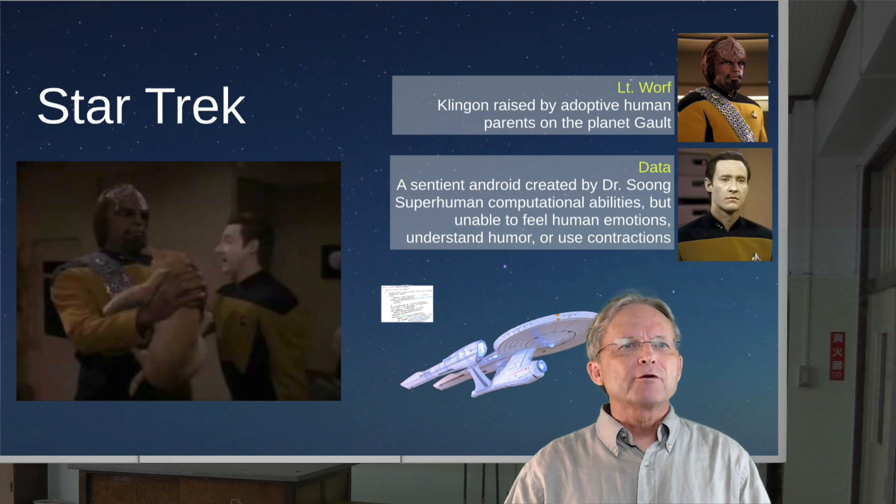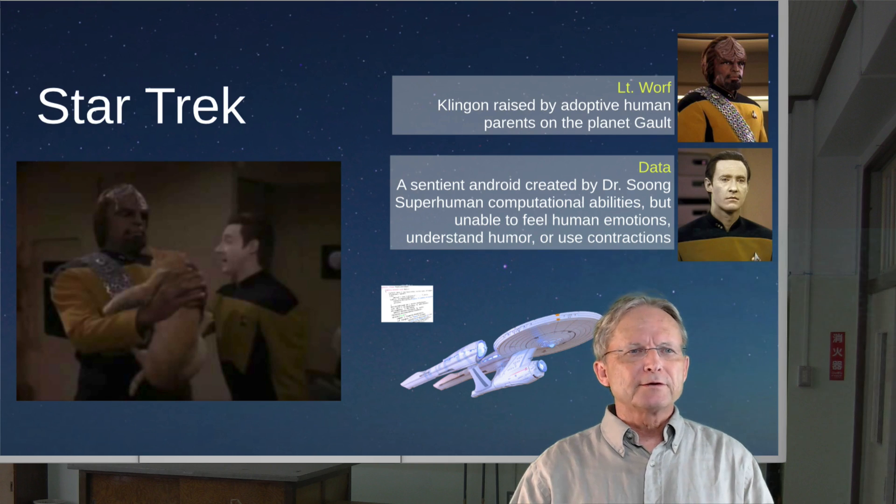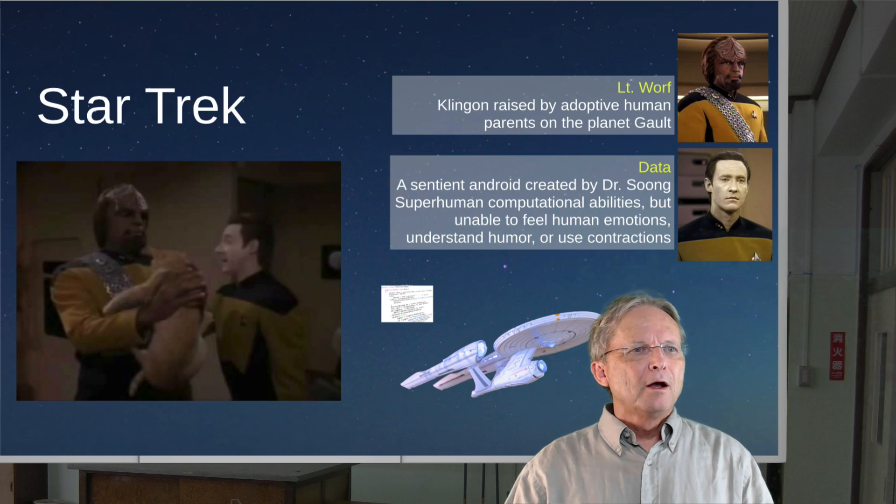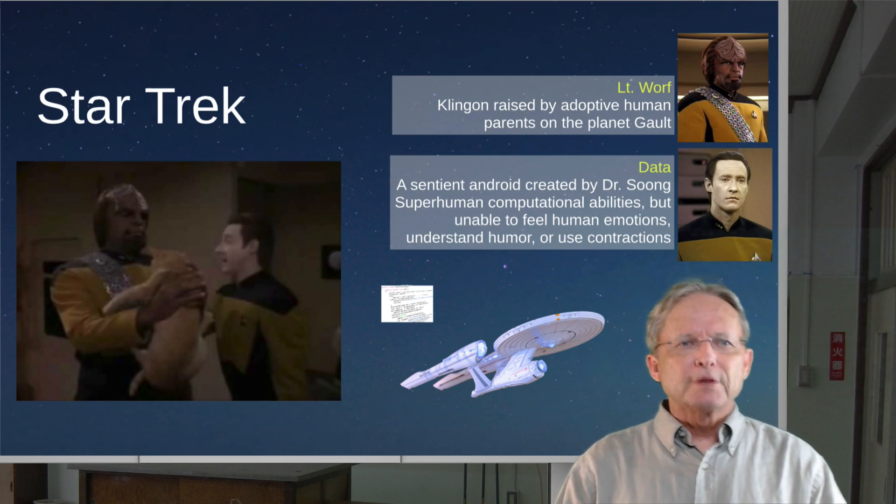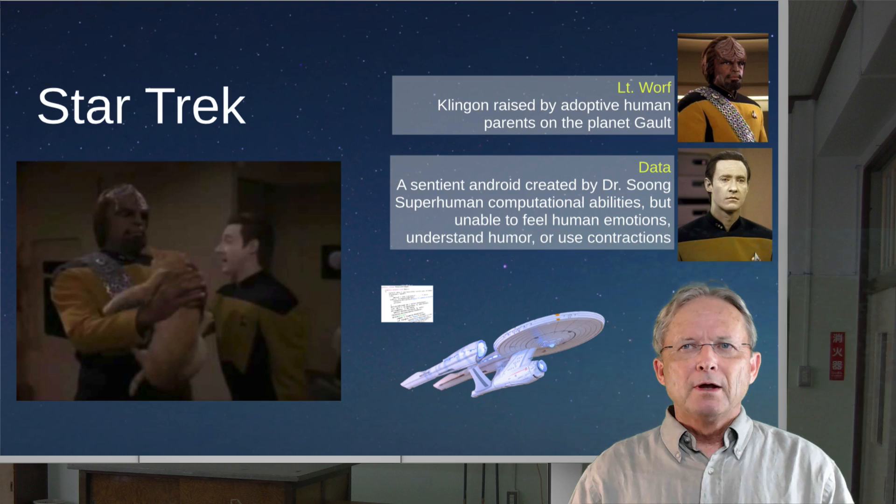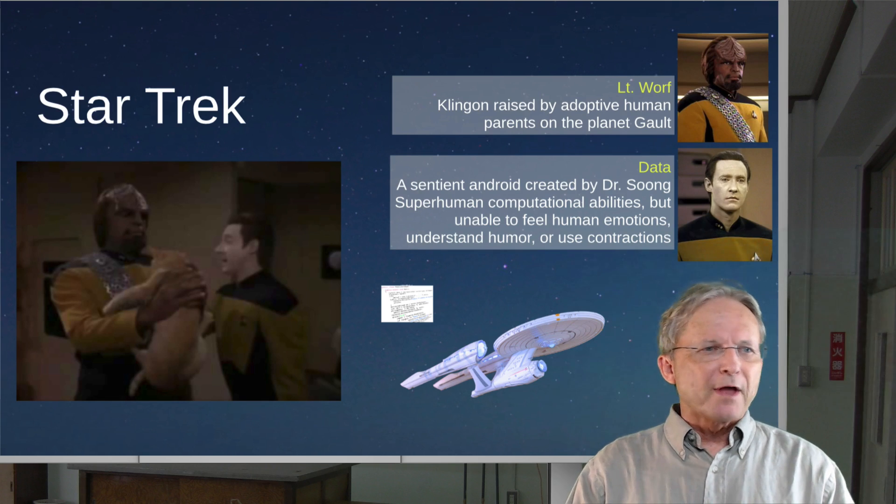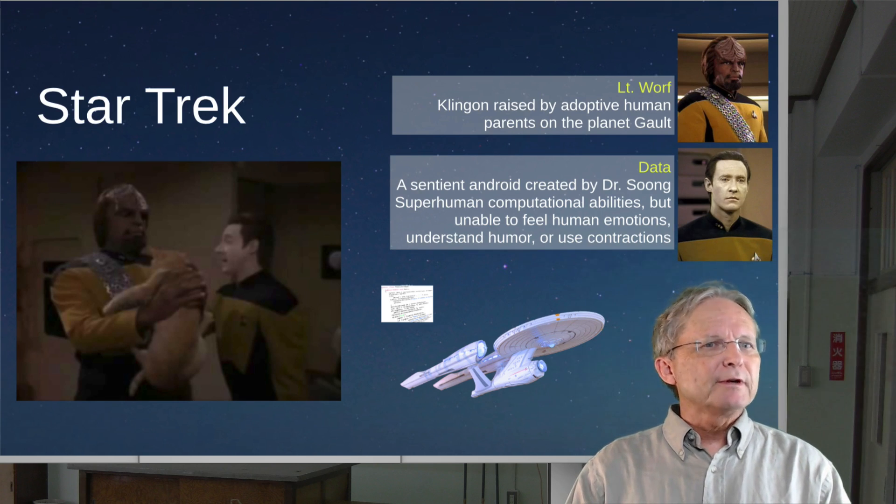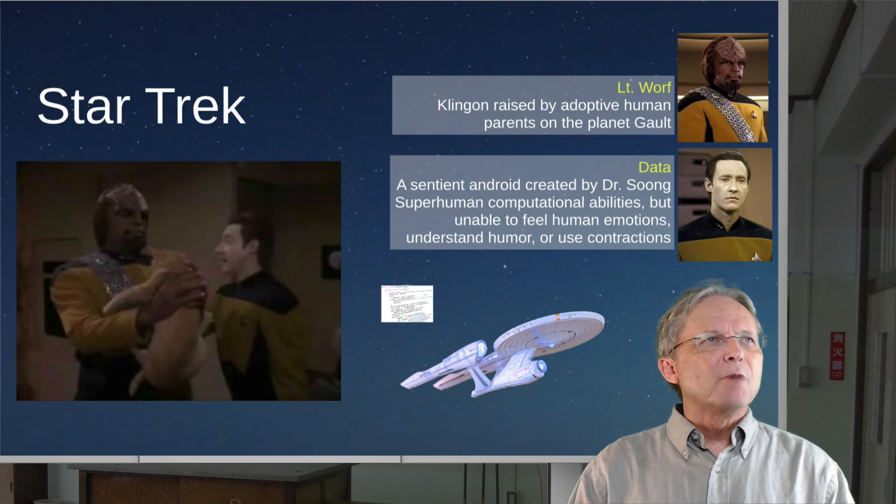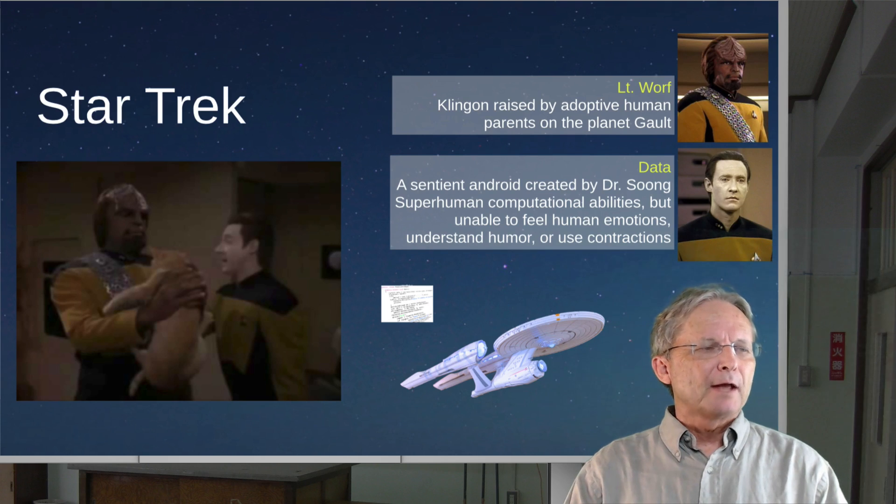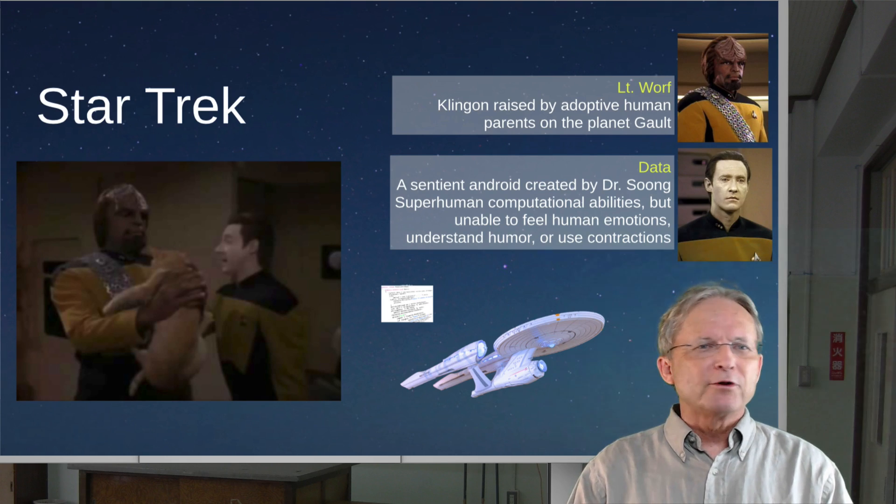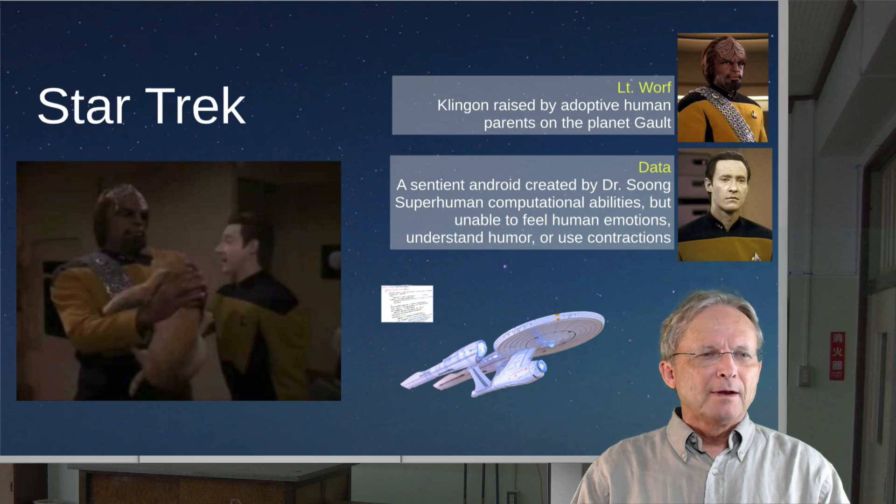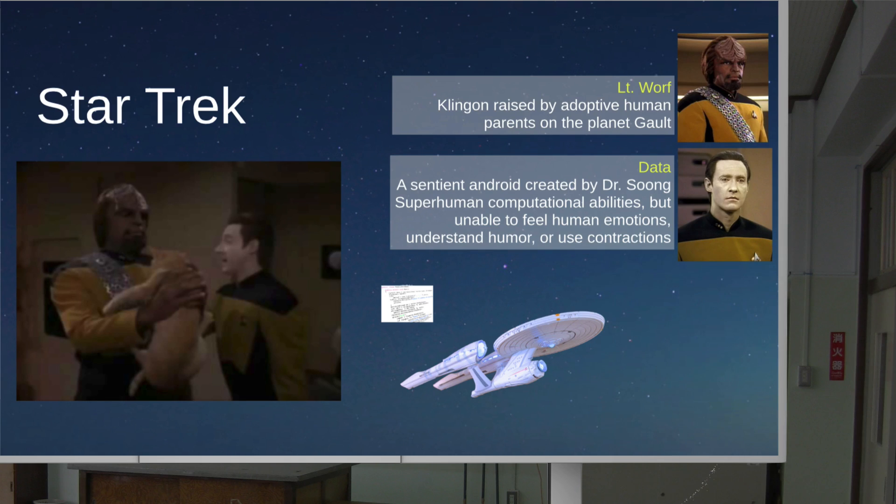He can make numerical calculations of enormous complexity, more like the computer that he is than the human being that he tries to be. Although he can do most things that people can do in a fairly convincing manner, the story is that his father purposely failed to give him an emotion chip. And he therefore has a really hard time with humor, for example. However, he also can't do contractions.